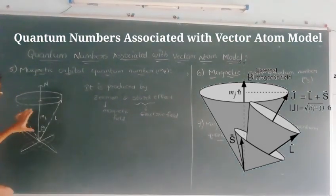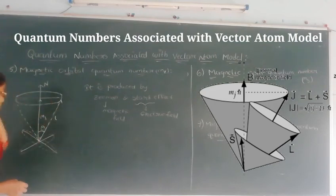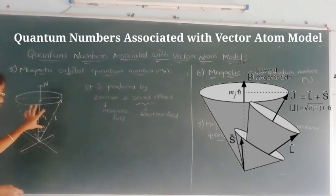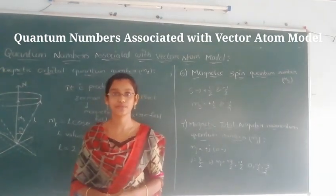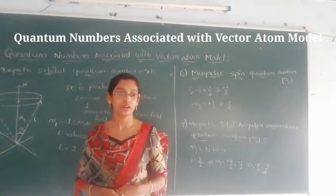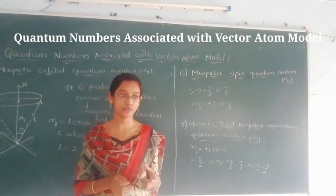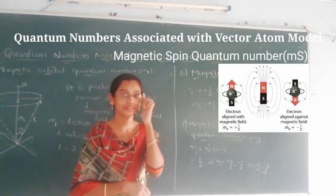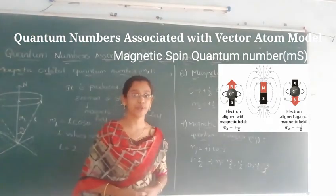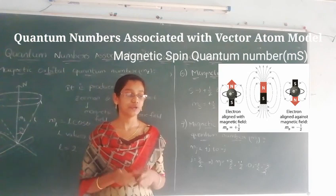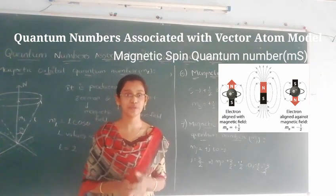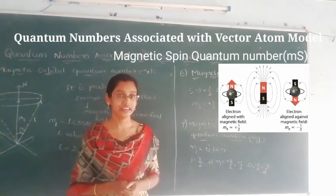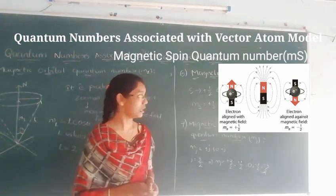When a magnetic field is applied to the orbital quantum number, projections at various angles theta are formed. This gives rise to the fifth quantum number, the magnetic orbital quantum number ML. The sixth quantum number is the magnetic spin quantum number, denoted ms. It arises when a magnetic field is applied to the spin quantum number, and its values are +½ and −½.